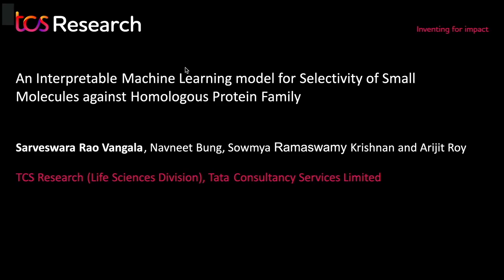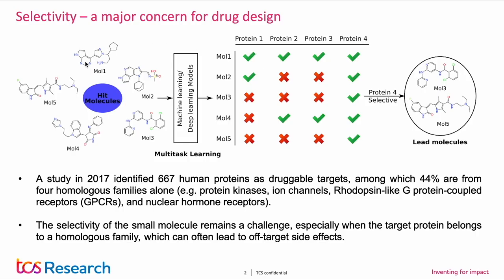Hi, I am Sarveshwar Rao. I will be presenting the work on selectivity of small molecules against homologous protein family. Selectivity is one of the major challenges in drug design and it is often difficult to achieve when the target protein belongs to a homologous family. A recent study found that around half of the druggable targets belong to four homologous families.